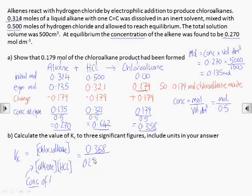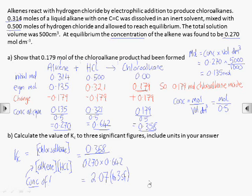Now we can work out a value for Kc, which comes out at 2.07 to three significant figures. The units of Kc are the units of concentration divided by the units of concentration squared, so moles to the minus 1 cubic decimeters.